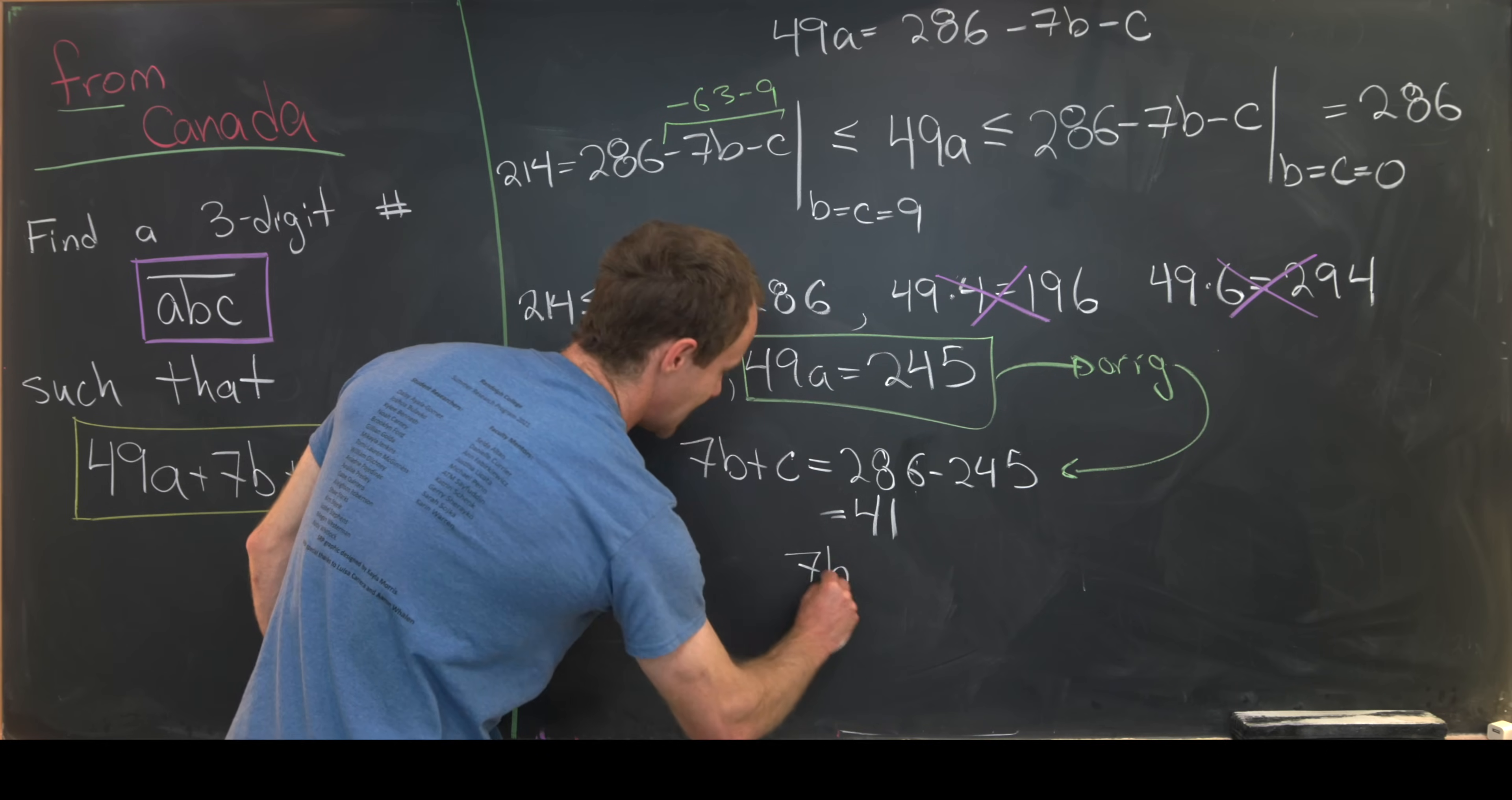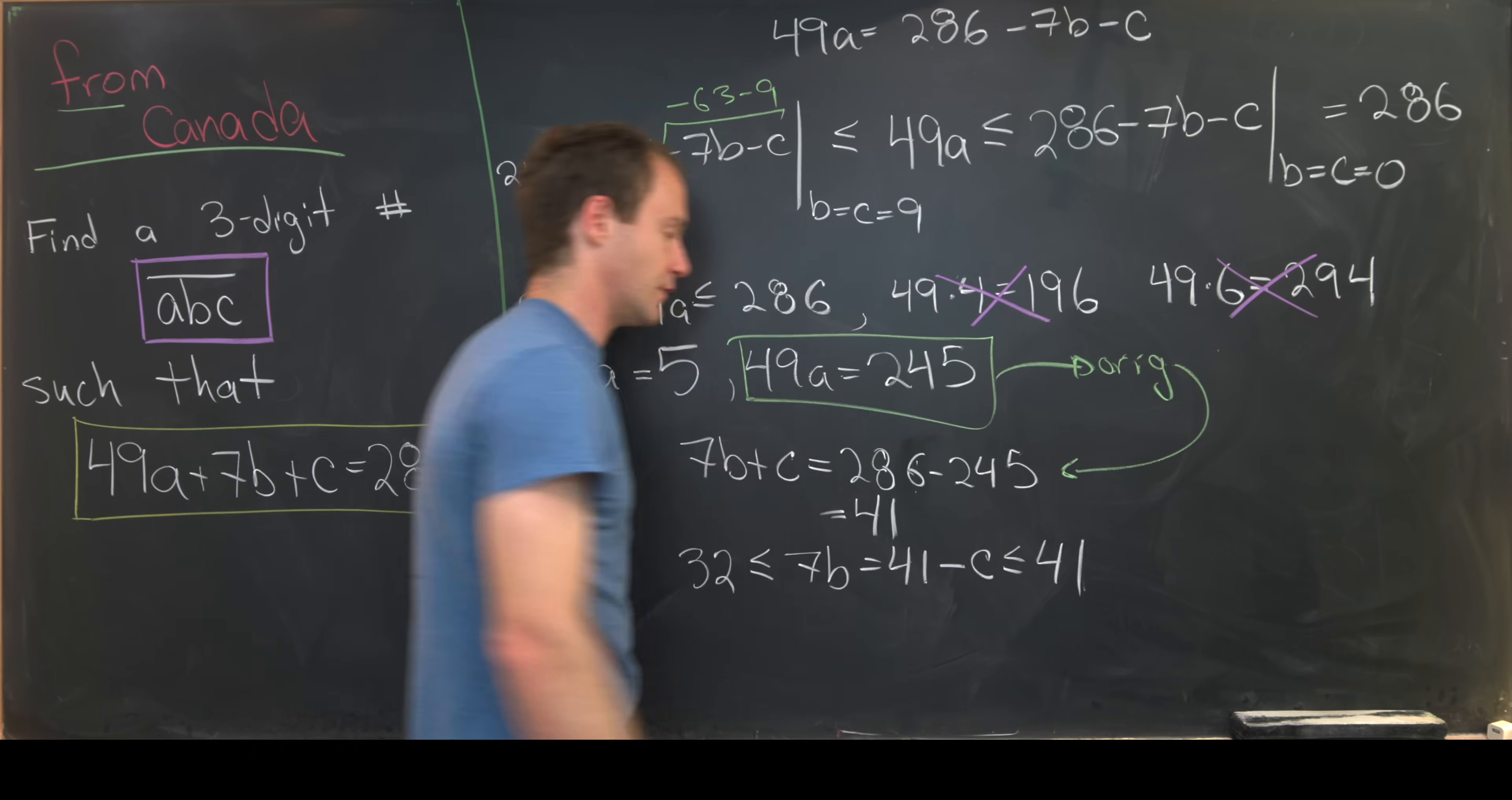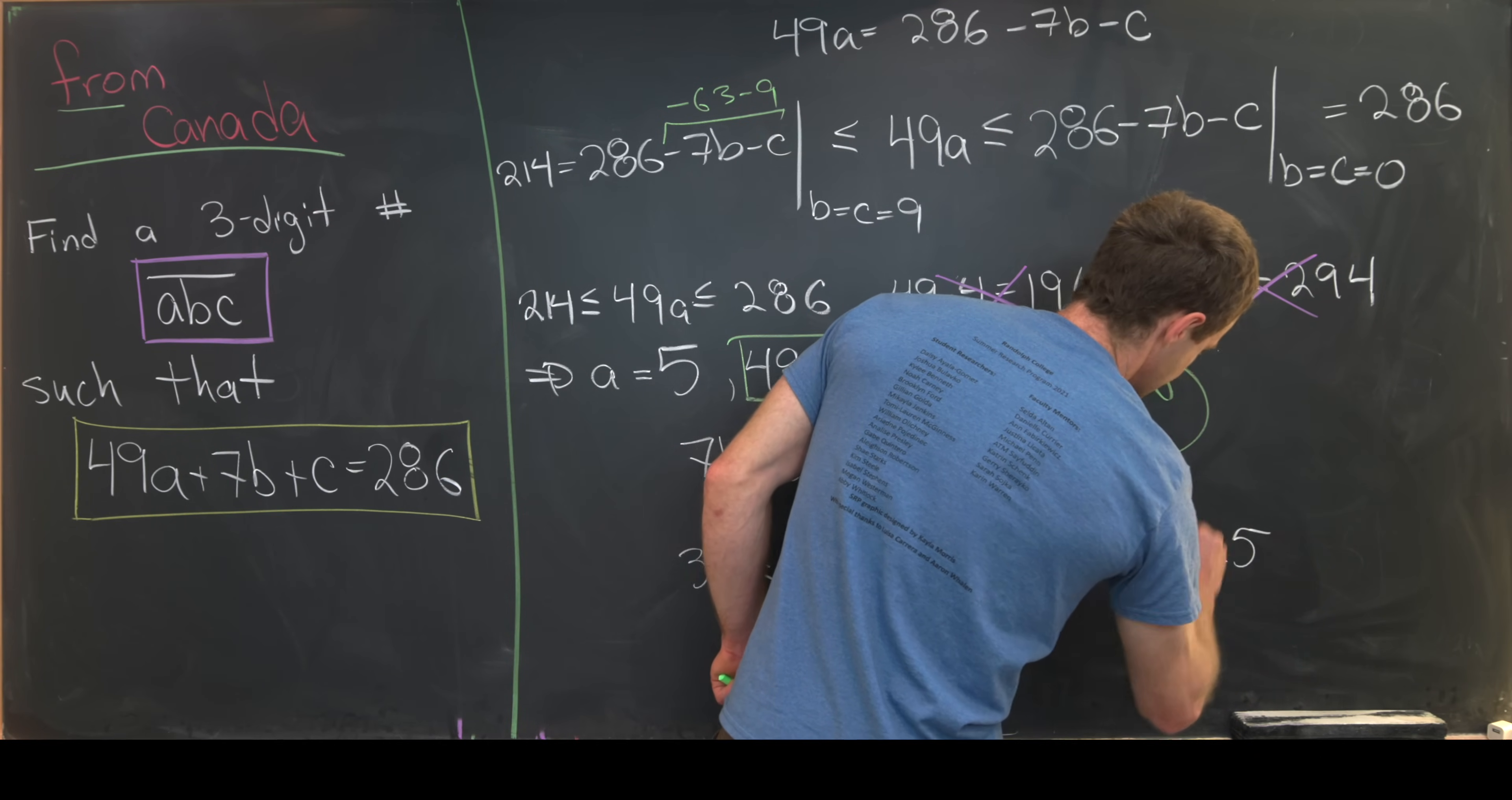We've got 7B is equal to 41 minus C. But let's notice that that is going to be bigger than or equal to 41 minus 9, which is 32, and less than or equal to 41 minus 0, which is 41. But that means we need a multiple of 7 between 32 and 41. There's only one of those. And that occurs when B is equal to 5.